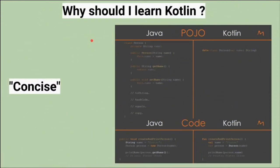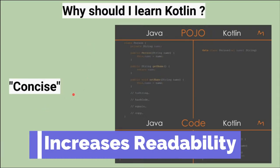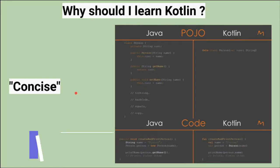The next important question is: why should I learn Kotlin? I had the same question when I started. Later I realized that it is very concise code — very simple and the readability is good. Kotlin helps to avoid a lot of boilerplate code, meaning I don't have to write much code, as it has been automated by Kotlin.